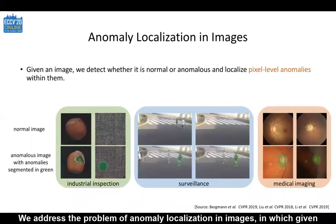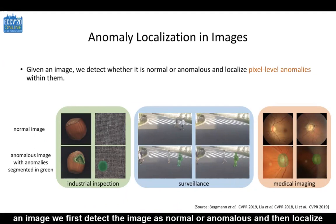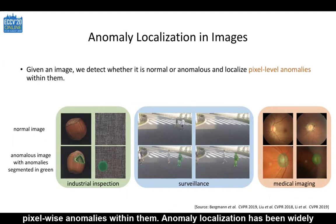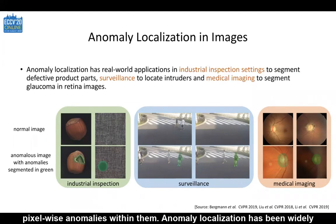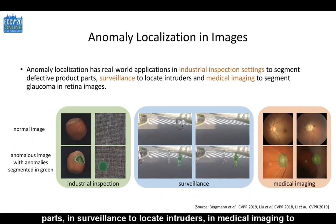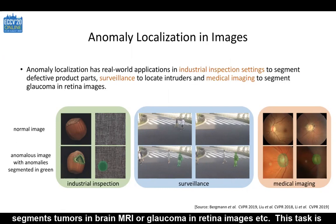We address the problem of anomaly localization in images, in which, given an image, we first detect the image as normal or anomalous and then localize pixel-wise anomalies within them. Anomaly localization has been widely applied in industrial inspection settings to segment defective product parts, in surveillance to locate intruders, in medical imaging to segment tumors in brain MRI, or glaucoma in retina images, etc.